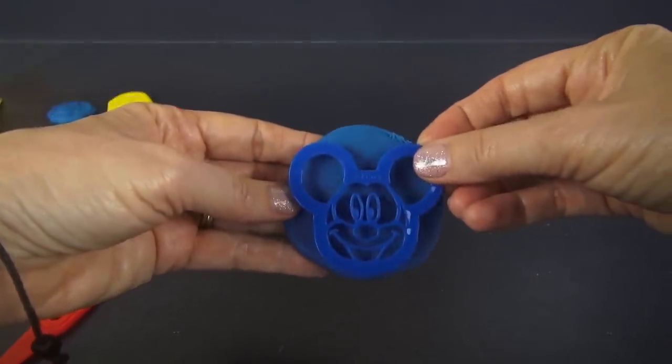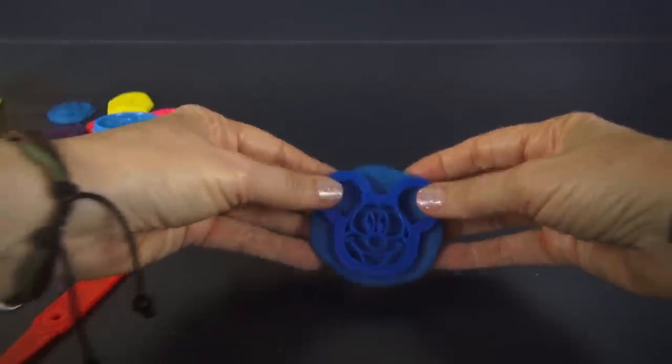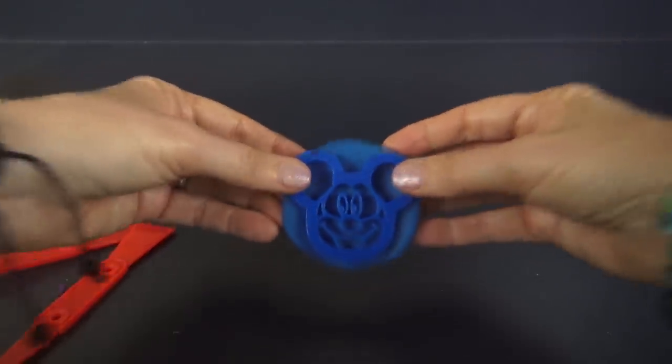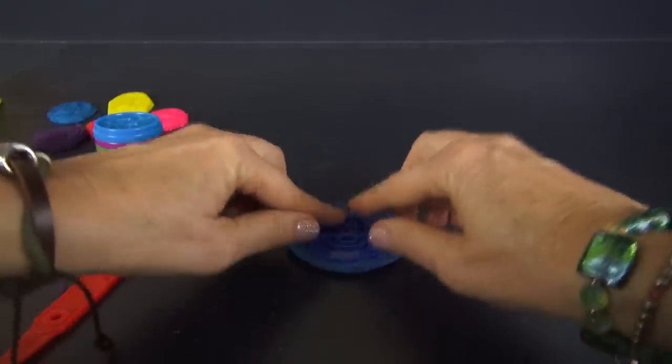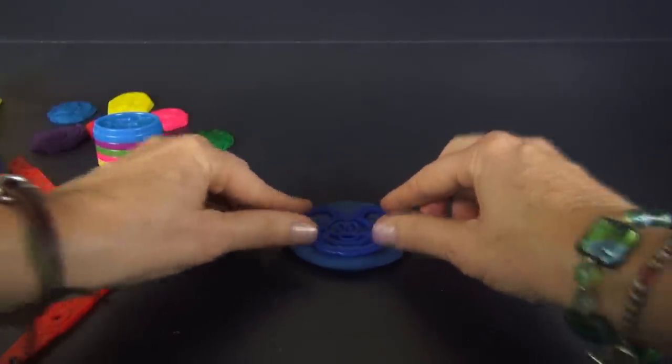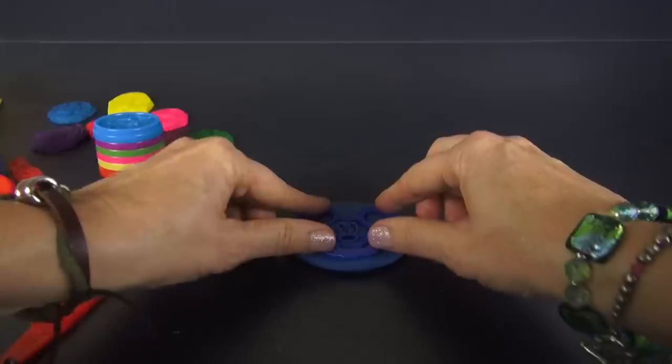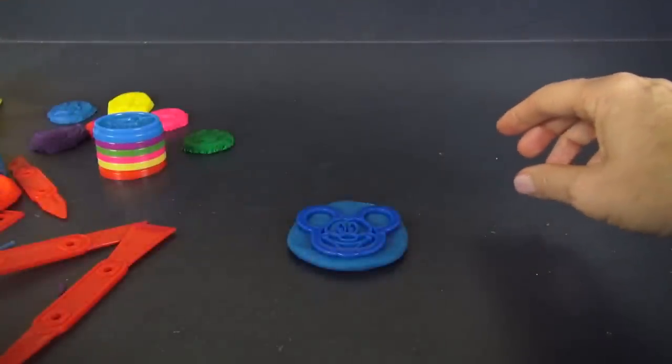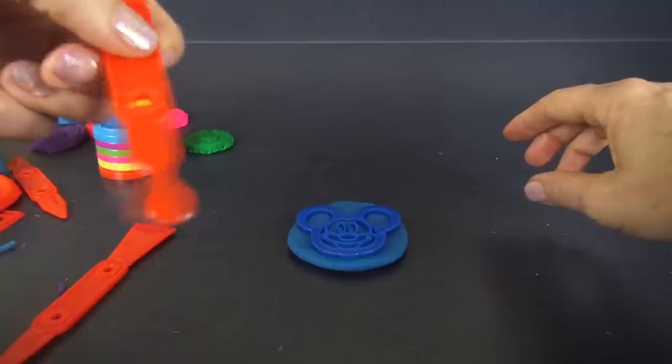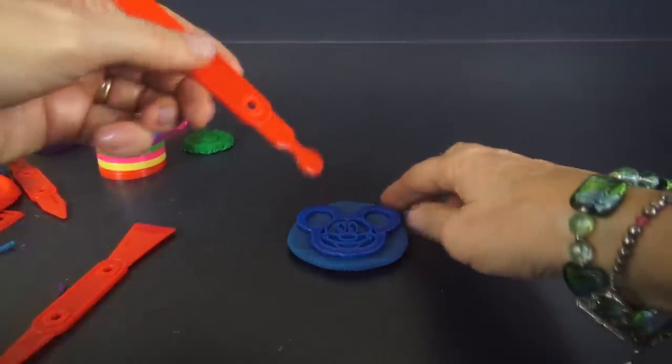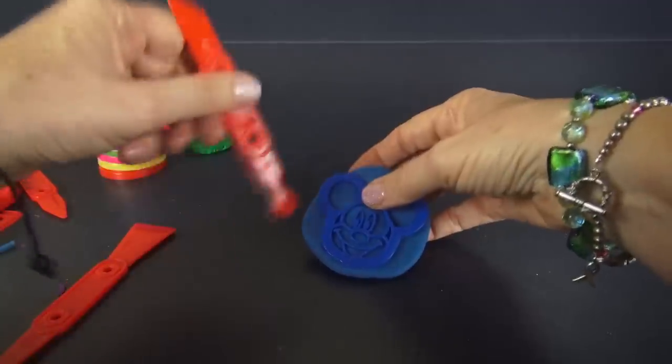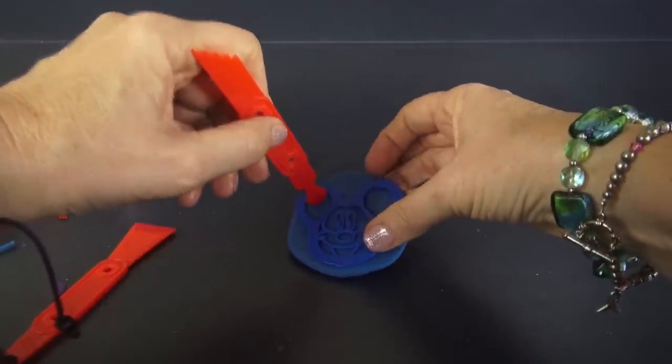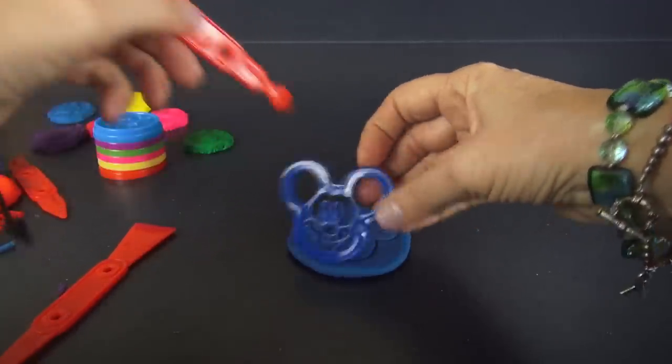This time, we're going to use this type of mold, which is a little bit different. This one, we press with our hands. We don't put it in the press. And I found that this tool comes in very handy when I'm trying to get the dough away from the mold. Oh, look at that.